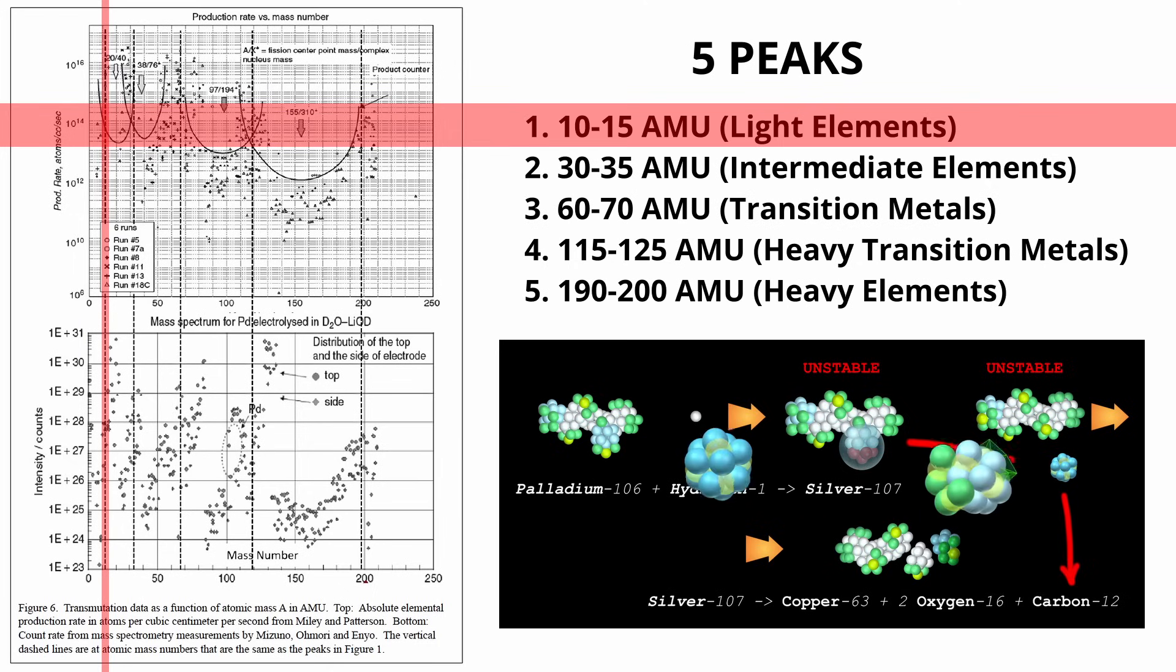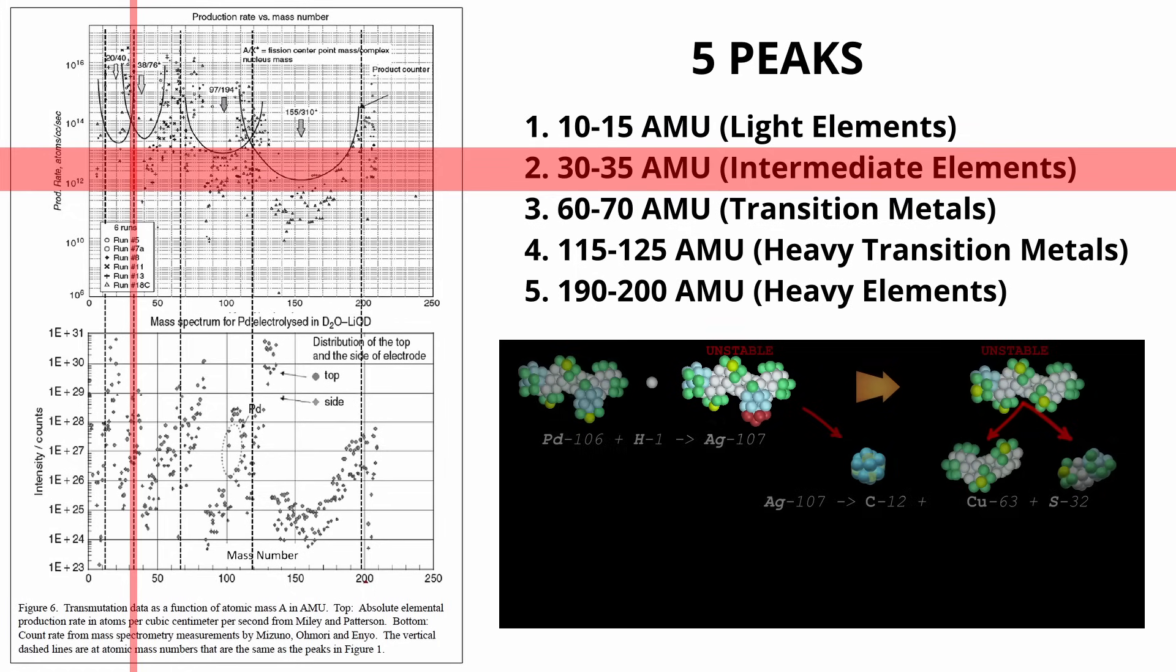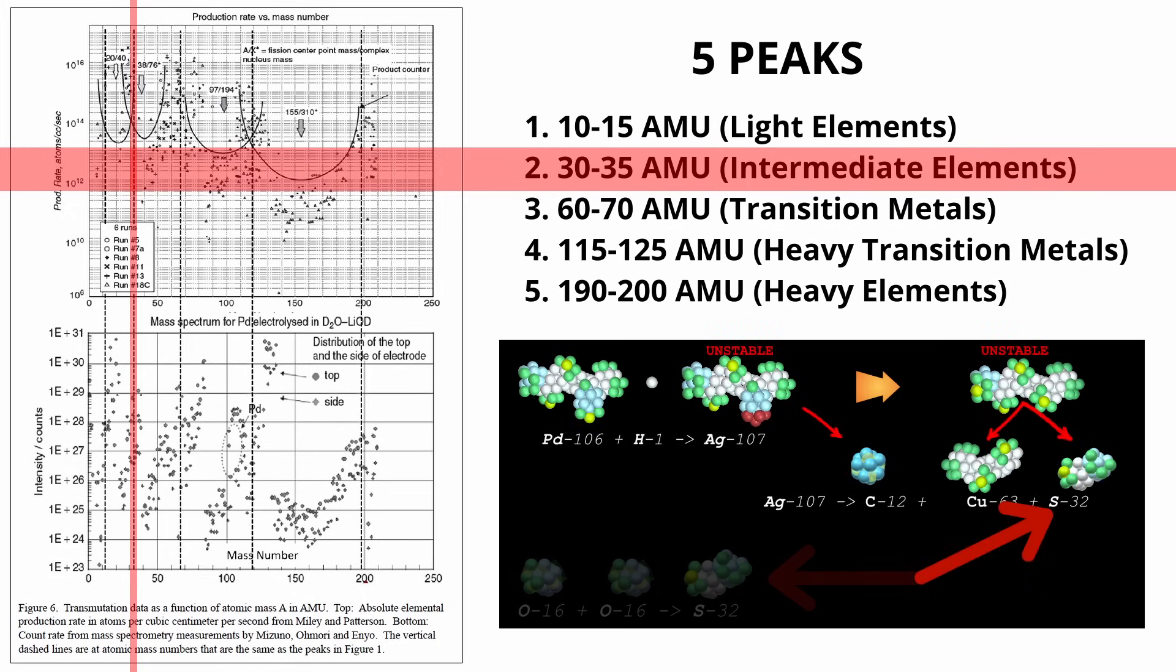The first peak: these are smaller chunks shed during fission consisting of carbon and oxygen. The second peak: these can come from a variety of reactions, primarily from larger chunks which occur during fission. It is also possible to occur from the fusion of smaller chunks such as the fusion of two oxygens to form sulfur.